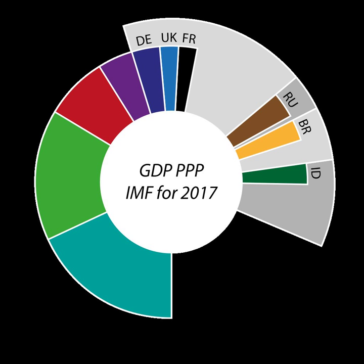It is however limited when measuring financial flows between countries and when comparing quality of same goods among countries. PPP is often used to gauge global poverty thresholds and is used by the United Nations in constructing the Human Development Index.